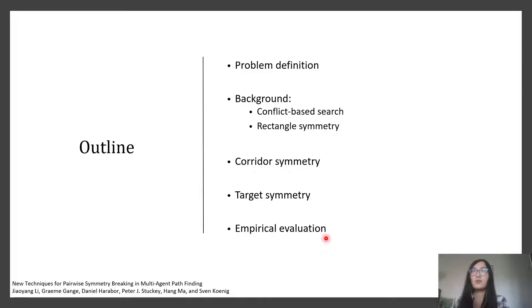In this talk, I will first define what multi-agent path finding is, and then show conflict-based search, the algorithm for solving this problem, and the existing work on symmetry reasoning. I will then show our new work, Corridor Symmetry Reasoning and Target Symmetry Reasoning, and show some experimental results.